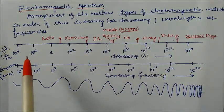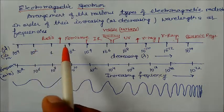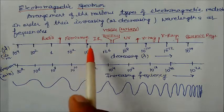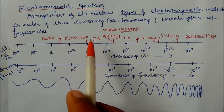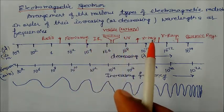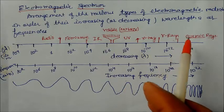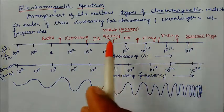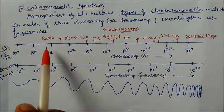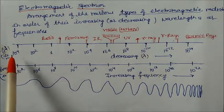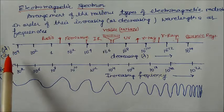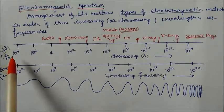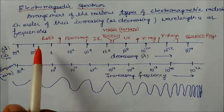Here I have drawn one axis for wavelength and one for frequency. In terms of wavelength, you can see it is decreasing from radio waves, microwaves, infrared rays, visible, ultraviolet, X-rays, gamma rays, to cosmic rays. The wavelength of radio waves is around 10 to the power 4 meters — that is ten thousand meters or about 10 kilometers.